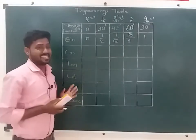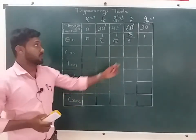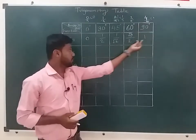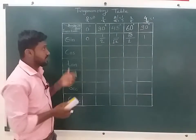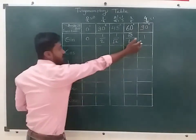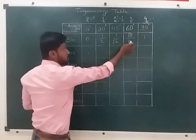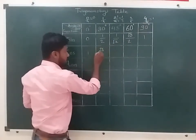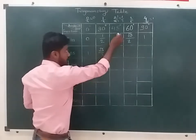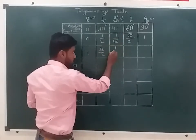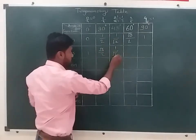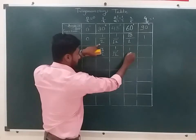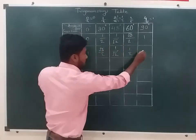We are making the cosine, and we have 90 degrees. We have to get 1 here. We have to get root 3 by 2 here, root 3 by 2. This is 1 upon root 2. The serial sequence is 1 by 2 here and 0 here.